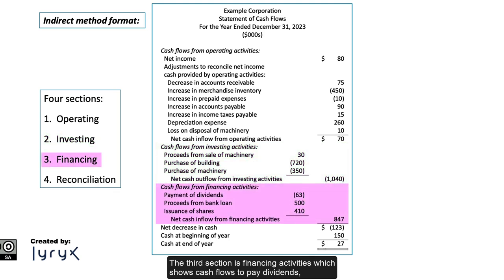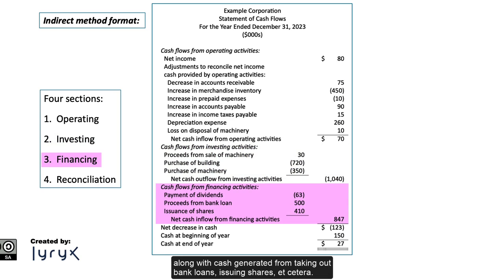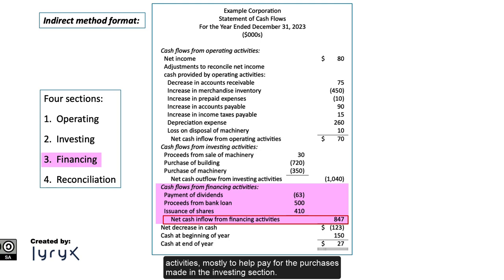The third section is financing activities, which shows cash flows to pay dividends, pay down debt, repurchase shares, etc., along with cash generated from taking out bank loans, issuing shares, etc. Here we see the company raised a net of $847,000 from financing activities, mostly to help pay for the purchases made in the investing section.